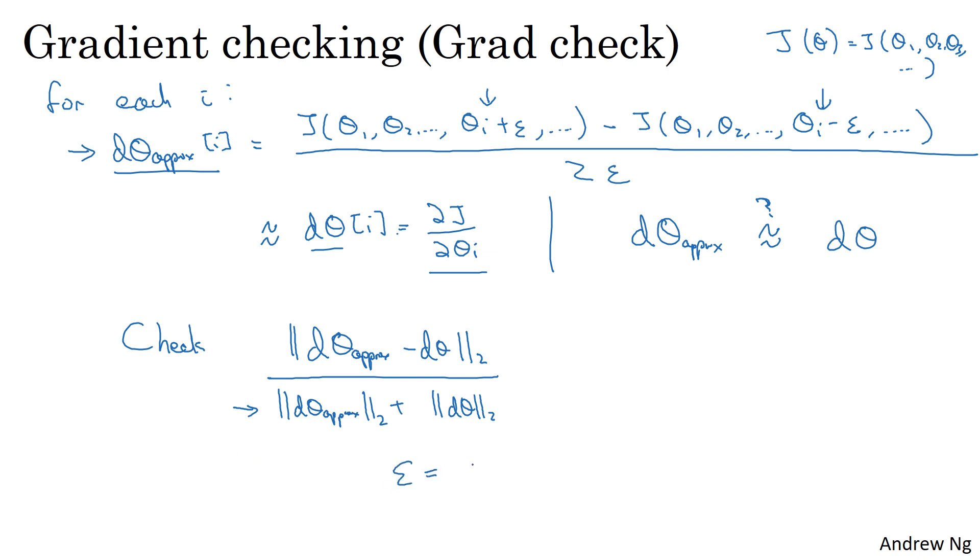So when you implement this in practice, I use epsilon equals maybe 10 to the minus 7. And with this range of epsilon, if you find that this formula gives you a value like 10 to the minus 7 or smaller, then that's great. It means that your derivative approximation is very likely correct.